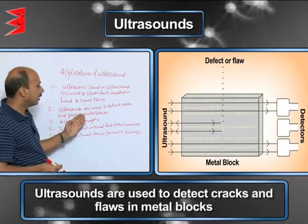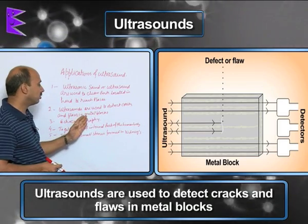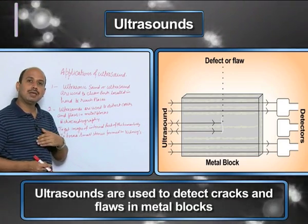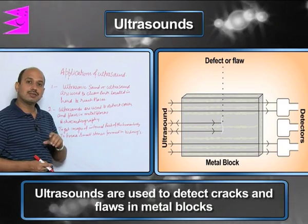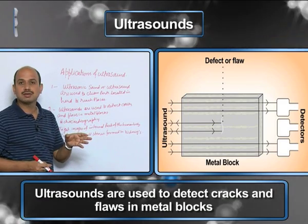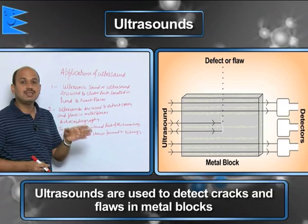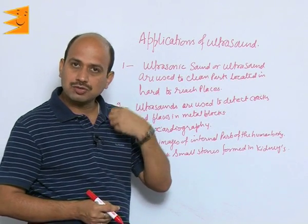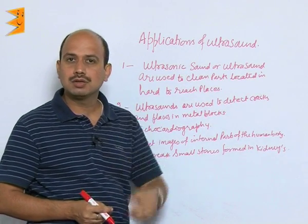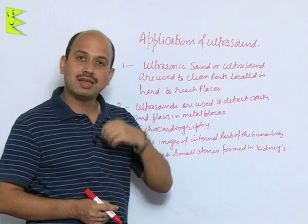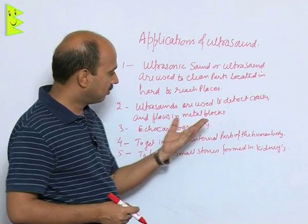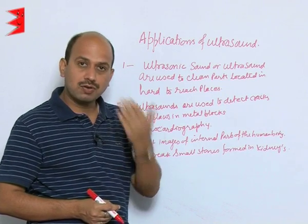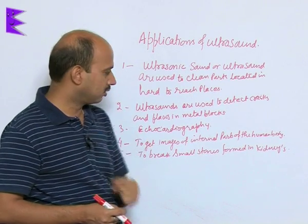Ultrasounds are used to detect cracks and flaws in metal blocks. If there are big metal blocks with flaws inside that are not visible to us, ultrasound waves are passed through the metal. If there is any flaw, the ultrasound wave gets reflected, and we can determine at what distance the flaw is and then correct it.